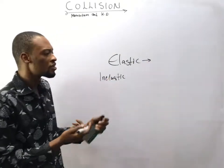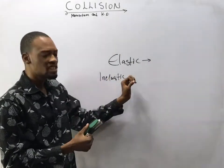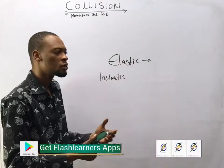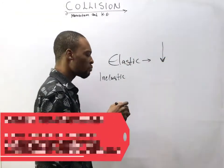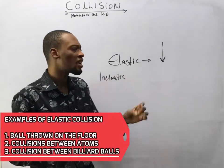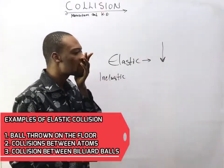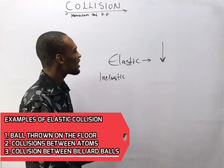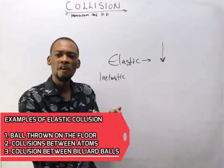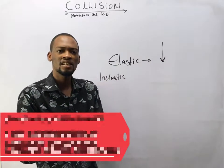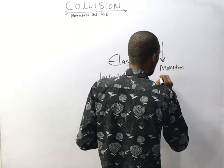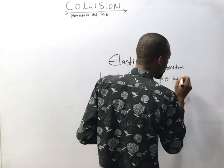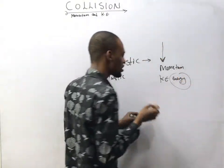Elastic collision is a collision in which the bodies remain the same before and after collision. For example, if you bounce a ball on the floor, the ball and the floor remain the same before and after collision. The movement of atoms and billiard balls are also elastic collisions, because the bodies remain the same before and after collision.